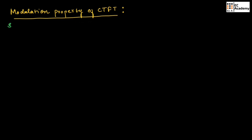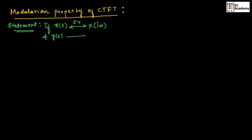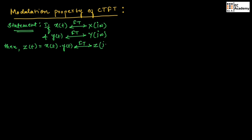Now, let us see this statement. It states that if X(t), for this if we perform Fourier transform, we will obtain X(jω) and Y(t). For this if we perform Fourier transform, we will obtain Y(jω). Then, let us take Z(t) which is equal to X(t) into Y(t). For this if we perform Fourier transform, we should obtain Z(jω) that can be written as 1 by 2π into X(jω) convoluted with Y(jω).